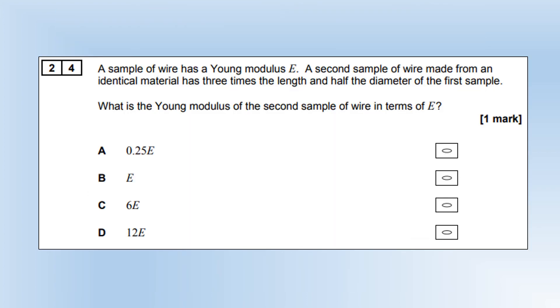A sample of wire has Young modulus E. A second sample made from the same material has three times the length and half the diameter. What is the Young modulus of the second sample in terms of E? It's going to be E. It's the same material, so it's going to have the same Young modulus.